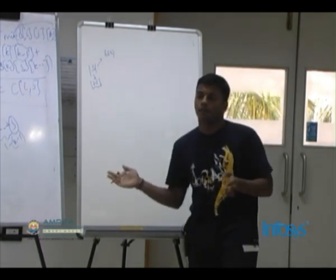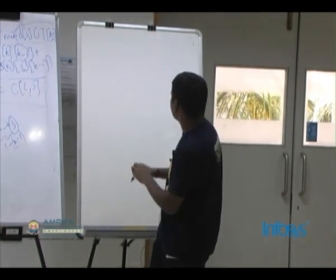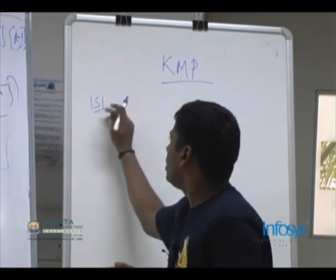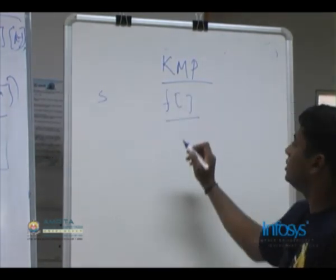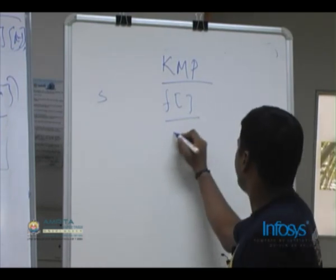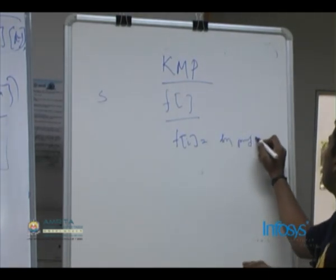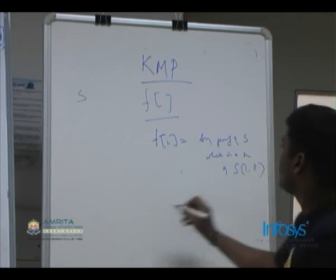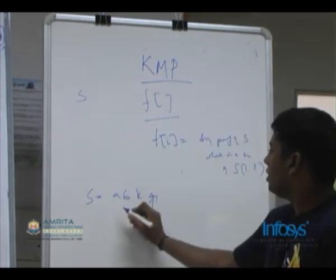We will now discuss a deterministic linear time algorithm for string matching: the Knuth-Morris-Pratt algorithm. KMP works as follows: given a source string s, you first preprocess the string and construct an array f. f[i] denotes the longest proper prefix of s[1..i] which is also a suffix of s[1..i].